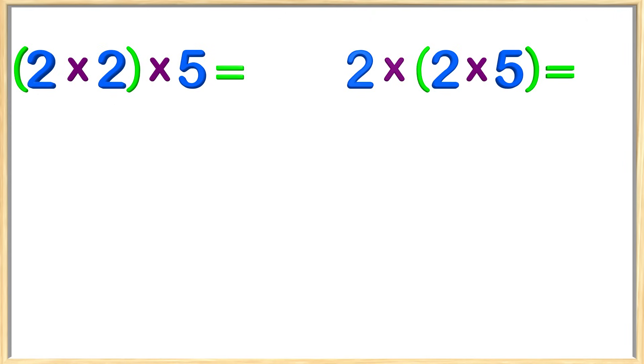We will start with the problem on the left. Remember, the King goes first, so let's multiply two by two. We get four, and now all we have left to do is multiply four by the last number, which is five. What is four times five? If you said twenty, you are correct.